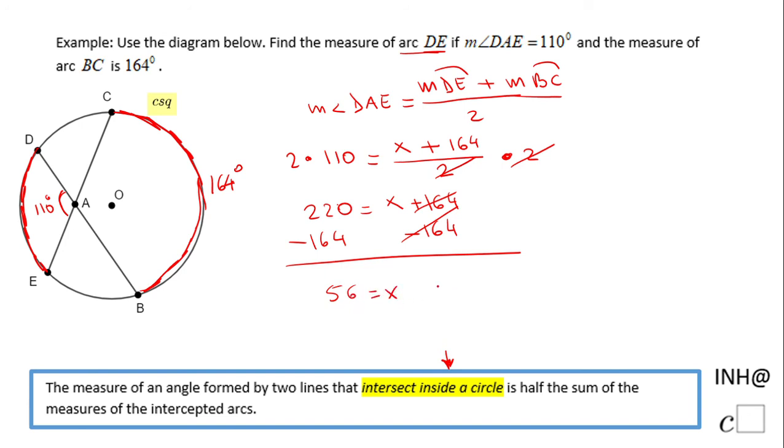x is 56, which means the measure of arc DE is 56 degrees. If you enjoyed this video, please don't forget to click the like button and come back on C squared for more help. Thank you.